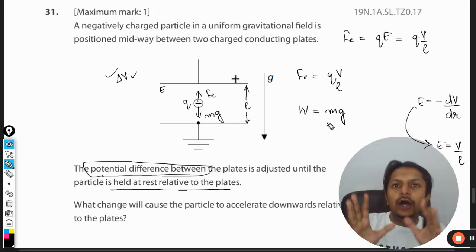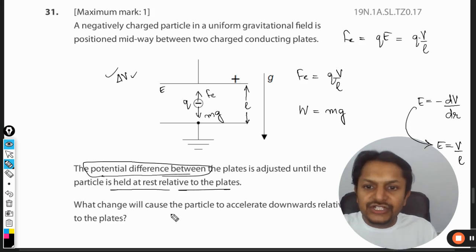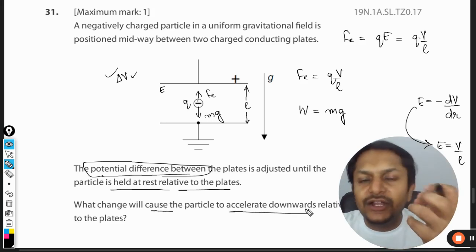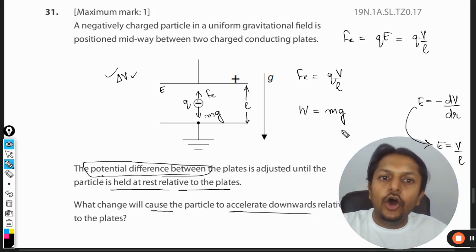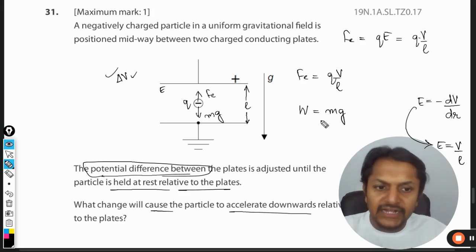Now we would be going into the options and we will see what has been asked. What change will cause the particle to accelerate downwards? You want the particle to go downward. It means that either the upward force should become weaker or the downward force should become stronger. Let us see the options.